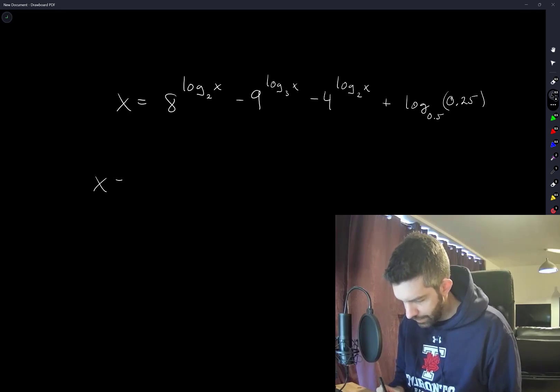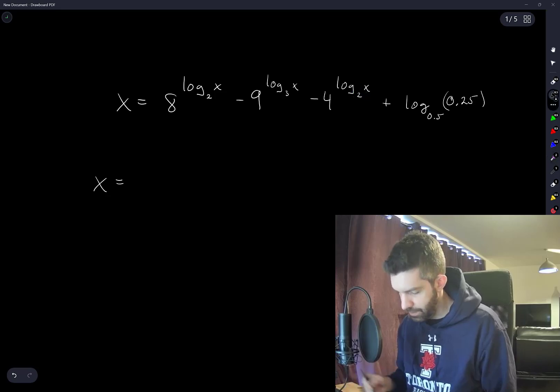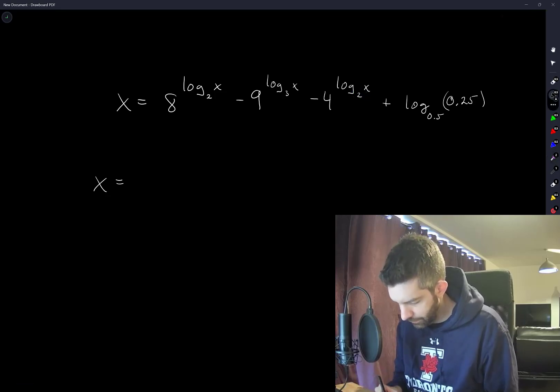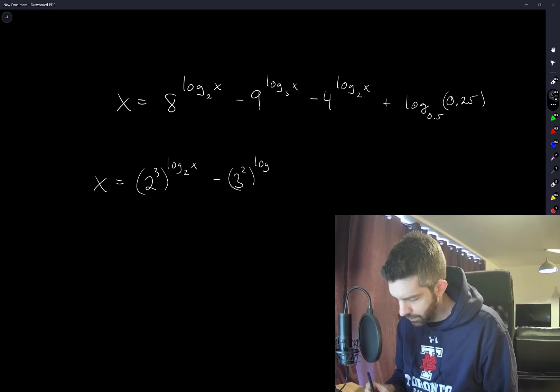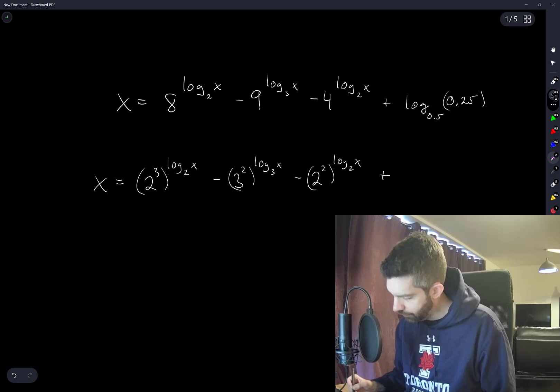Okay, so first I'm going to rewrite everything, all of these numbers—the base of these exponents—I'm going to write them in terms of powers of the thing that appears in their logarithm. So this is 2³ to the power of log base 2 of x. This is 3² to the power of log base 3 of x. This is 2² to the power of log base 2 of x. And you'll notice this number here is just equal to 2.